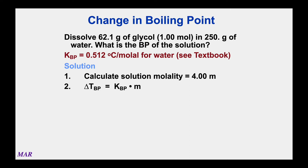Here's an example: we have 62.1 grams of ethylene glycol, which is 1.00 moles, in 250 grams of water. What's the boiling point of the new solution? Water normally boils at 100, so our answer had better be a number larger than 100 degrees. To answer this, we need the K value for water, which is 0.512. Delta T, the amount of temperature it's going to be higher, equals that K value times M. The molality, as we saw in a previous example, was 4.00 molal.